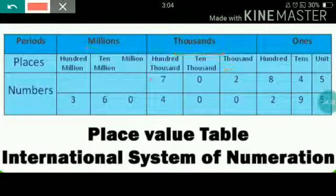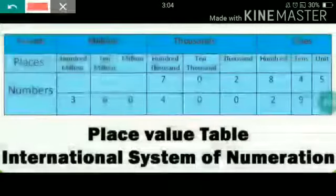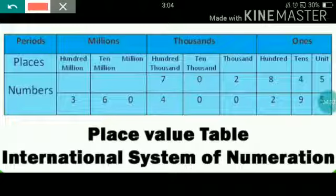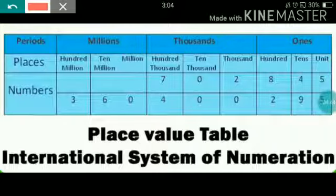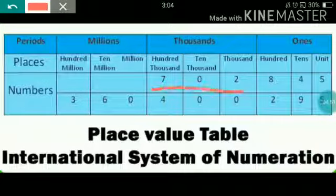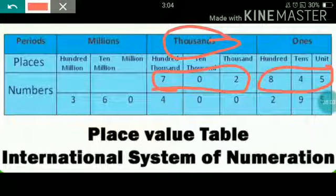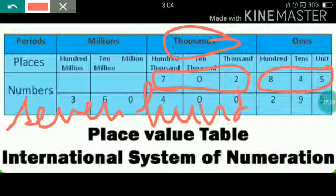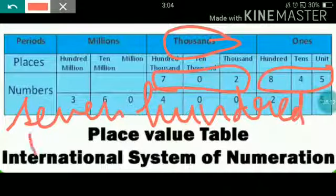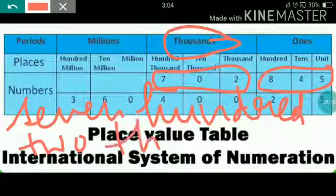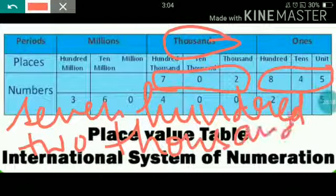Let's understand with an example. The number 702845 — we write it from the back side. 702 is the part of thousands, so we write it as 702,845.